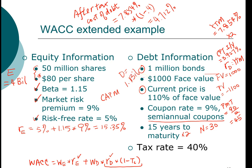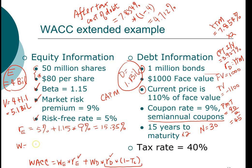We have equity of $4 billion and debt of $1.1 billion, giving a total firm value of $5.1 billion. The weight of equity is $4 billion divided by $5.1 billion, which is approximately 78.43 percent, or 0.7843. The weight of debt is $1.1 billion divided by $5.1 billion, approximately 21.57 percent, or 0.2157. When you add the two weights together they should equal 1.